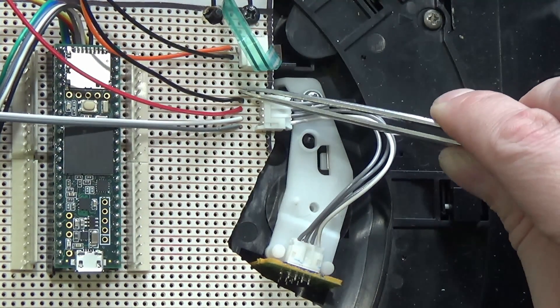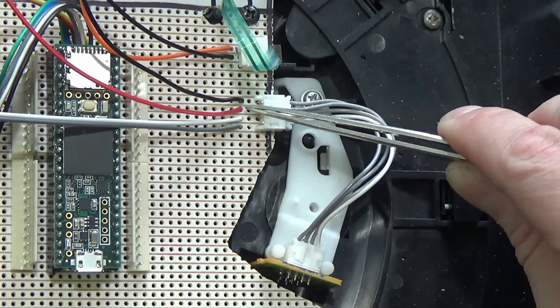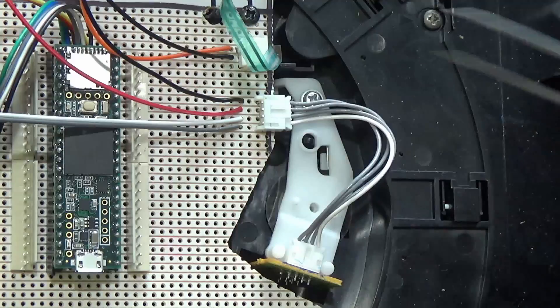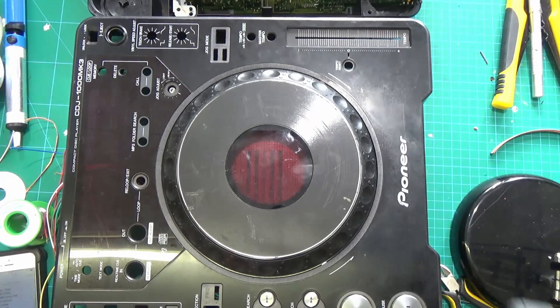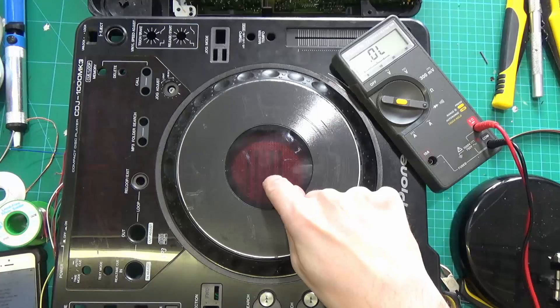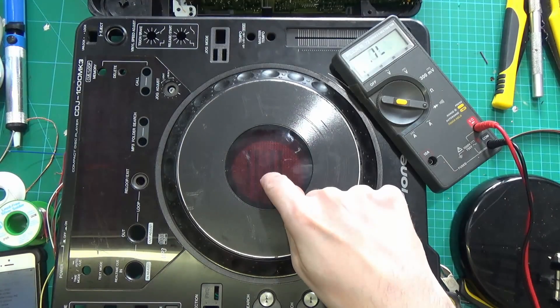So the jog wheel we have ground, plus voltage, data one and data two. So the data one and data two need to go to digital pins on the Teensy. The jog pressure switch is just another digital input, and as we can see when we press it down it just shorts the circuit.